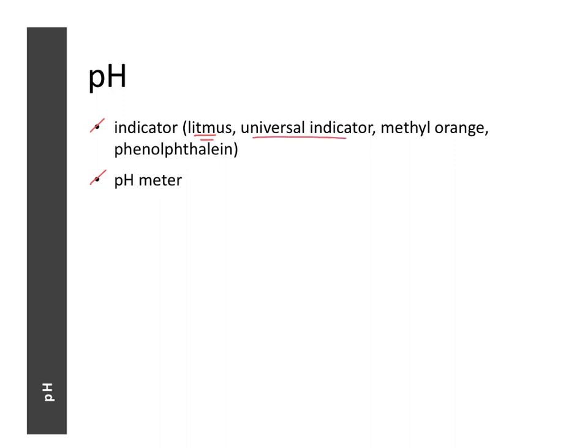Universal indicator is a better option — it produces a slightly different color for each pH, allowing us to determine pH more accurately. Other examples include methyl orange, which is important because it's used in titration practicals, and phenolphthalein, which is also common in titrations but has been banned from labs in recent years, though it's still worth knowing for theory.